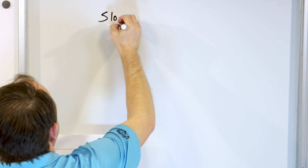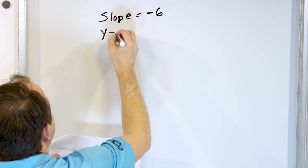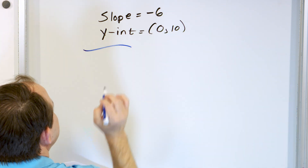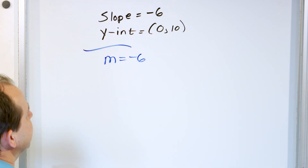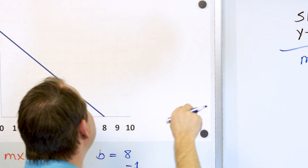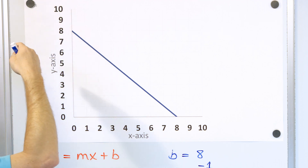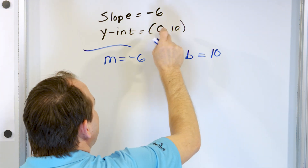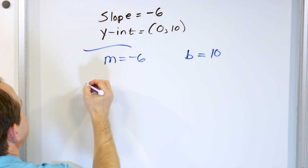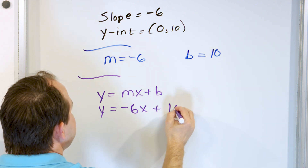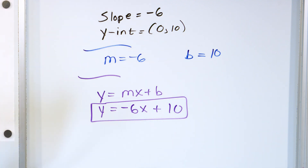Let's take a look at problem number two. In this case I'm going to do something a little different. Instead of giving you a graph, I'm going to tell you that the slope is equal to negative six, and I'm going to tell you that the y-intercept is zero comma 10. If the slope is negative six, then m is negative six — there's nothing else to write. The y-intercept b is 10, because the y-intercept is zero comma 10. Anytime you cross the y-axis, it's zero for x and some number for y. So b is equal to 10. Now that you have both pieces of information, it's m times x plus b: negative six times x plus 10. The equation of the line is negative six x plus 10.